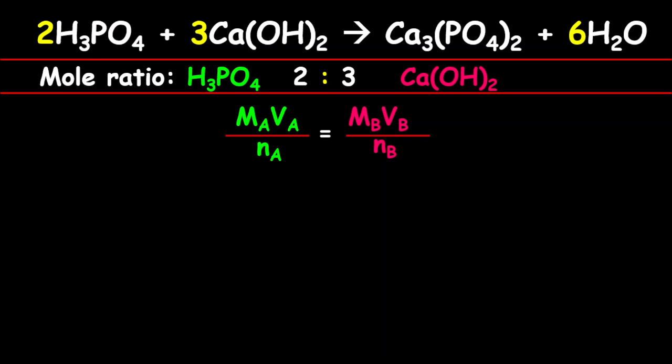M represents the molarity or molar concentration. V represents the volume, and n represents the number of moles based on the balanced chemical equation, or simply the molar ratio. A is for the acid and B is for the base.